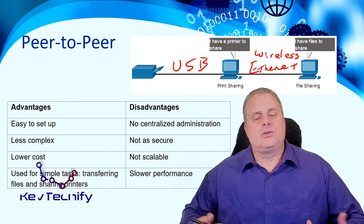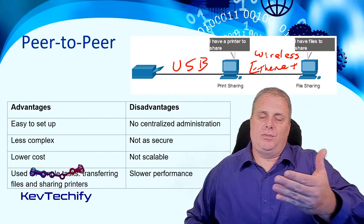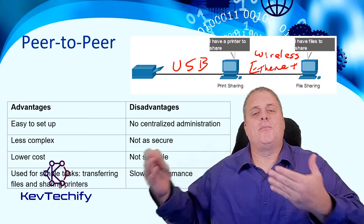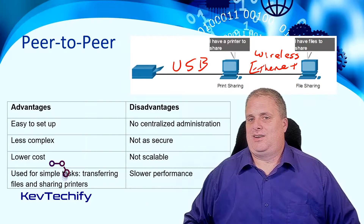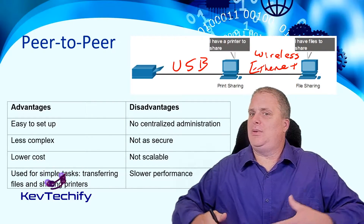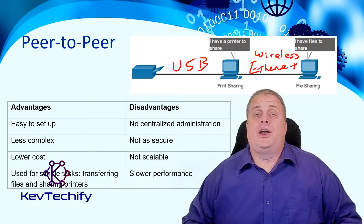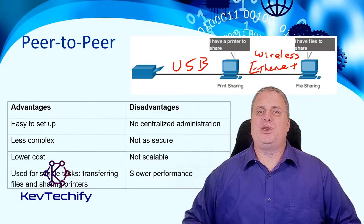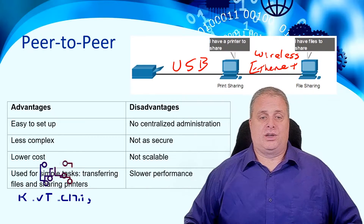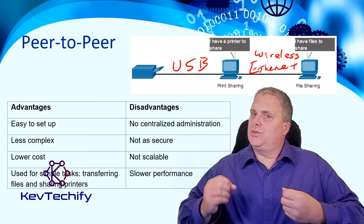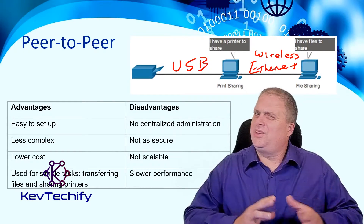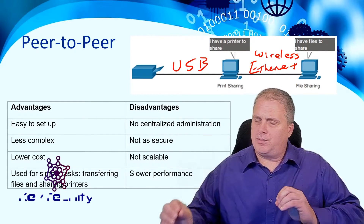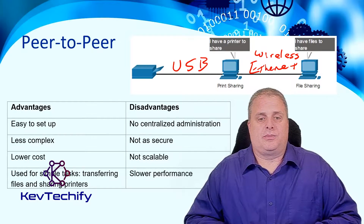The downside of peer-to-peer is there's no centralized administration — if you make a change to one computer, you have to make the change to the other side too, adding permissions or users on both computers. The security is just not there, and it's not scalable — you can maybe get five computers. A network like a veterinarian's office would work great for this, but in a bigger network dealing with hundreds of computers, it won't work as well. We typically use peer-to-peer in smaller offices, for gaming, or when you want to quickly share something between two computers.